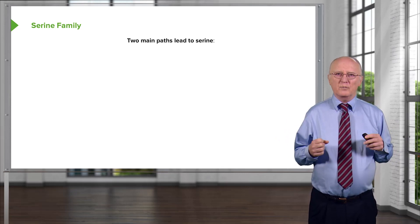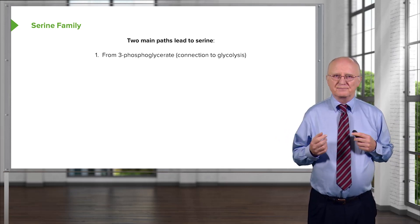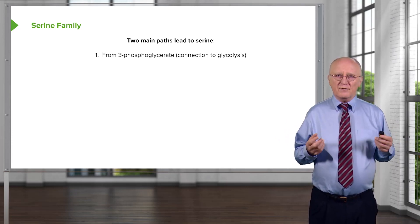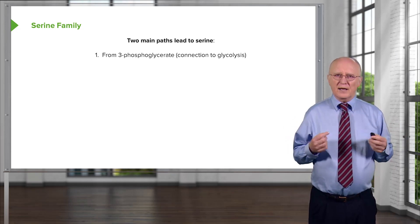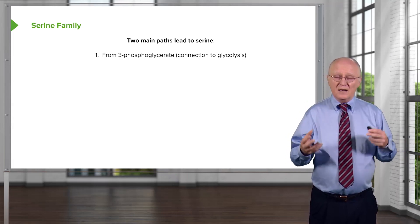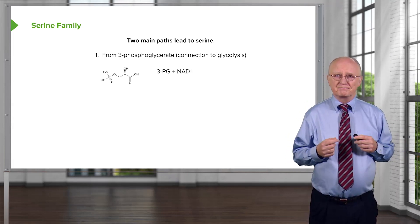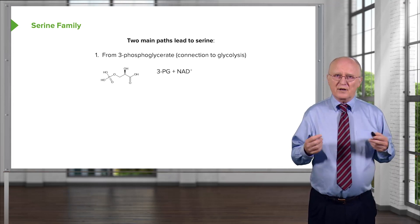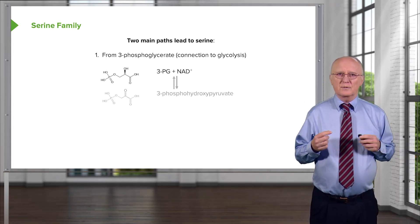There are two main pathways that lead to serine in our cells. The first one starts from 3-phosphoglycerate. This molecule, if you recall, is found in the glycolysis pathway, so we see a linkage between glycolysis and this amino acid metabolism. The reaction starts with an oxidation of the 3-phosphoglycerate, as we can see here.